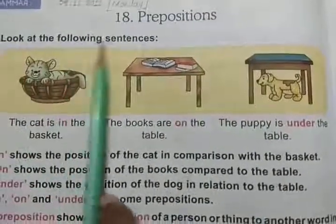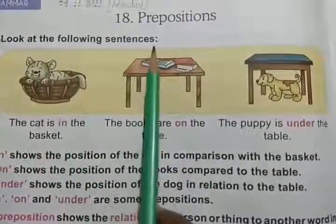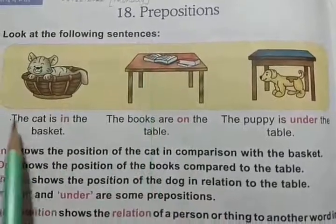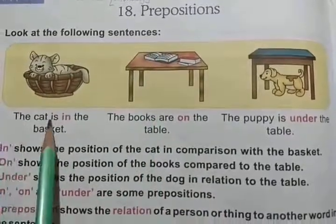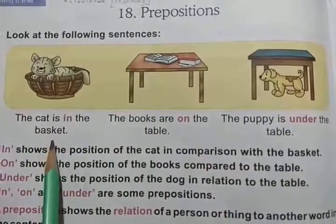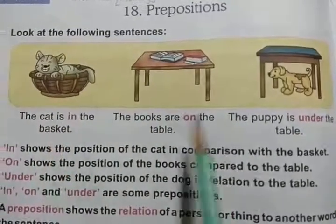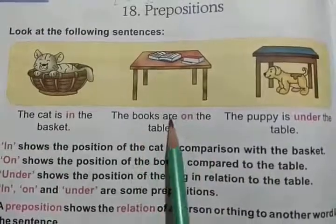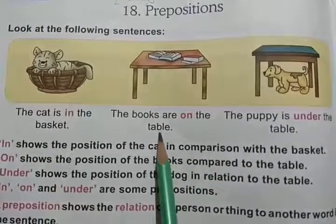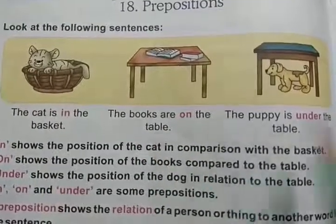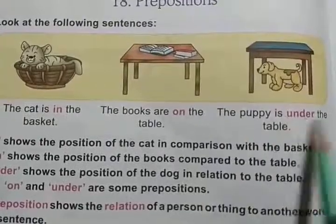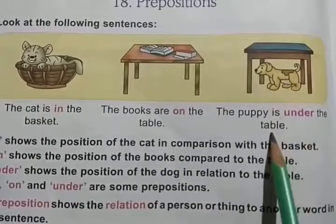Look at the following sentences. The cat is in the basket. The books are on the table. The puppy is under the table.